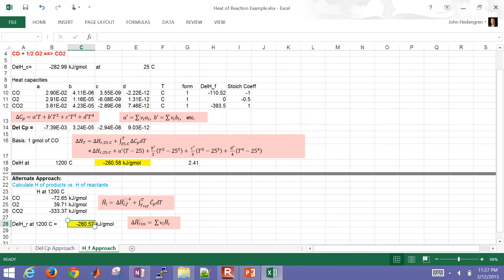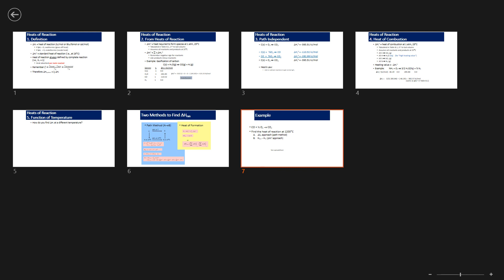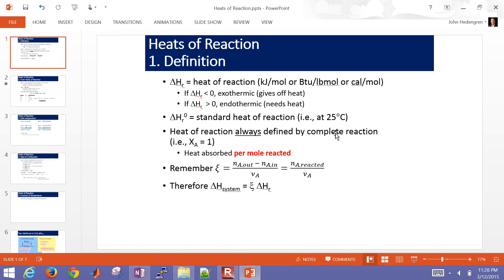Let's review what we covered today. We talked about definitions of heats of reaction, heats of formation, and how to calculate them. We discussed path independence and Hess's law — you can do individual or overall reactions. We covered heats of combustion and high versus low heating values. Finally, we covered two methods to find the heat of reaction at temperatures other than 25 degrees Celsius: the path method using delta C_p, and the heat of formation method.